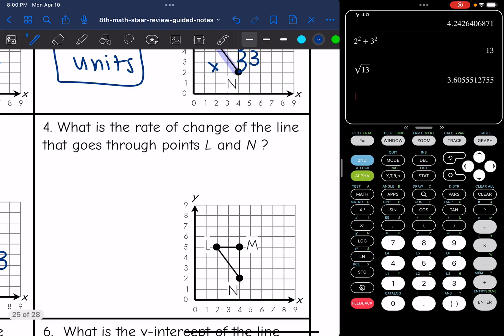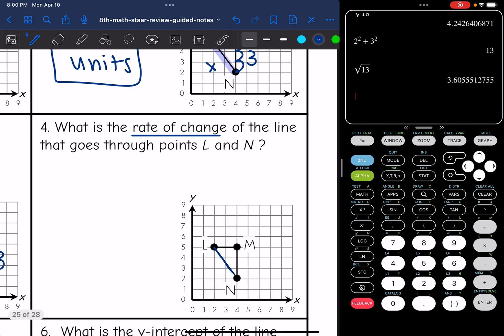This next question says, what is the rate of change of the line that goes through the points L and N? So I'm wanting to find the slope of that line. I'm going to do rise over run. First thing I notice is that that line is going down, so it's negative. The rise is 3, and the run is 2. So the slope is negative 3/2.